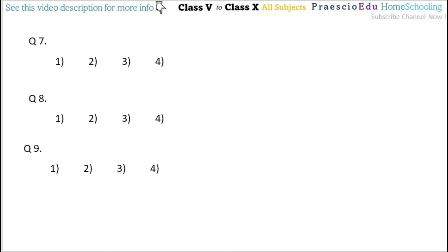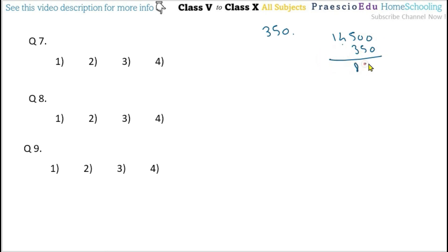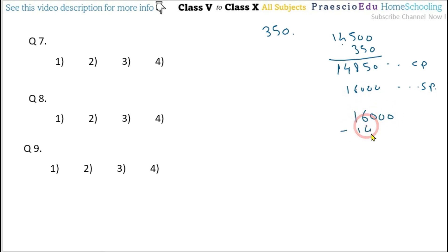Question number 7: Gauri spent rupees 350 on repairing a TV set which was purchased for rupees 14,500. Adding purchase price and repair cost gives a total CP of rupees 14,850. She sold it for rupees 16,000. Since SP is greater, profit equals 16,000 minus 14,850 equals rupees 1,150. This is given in option number 3.